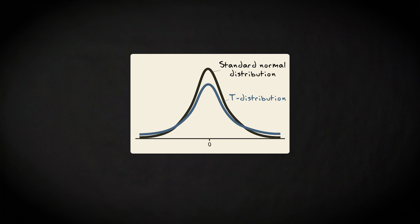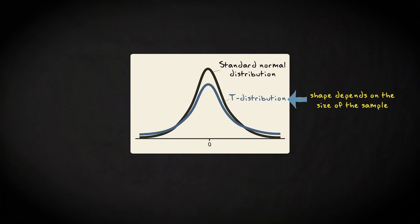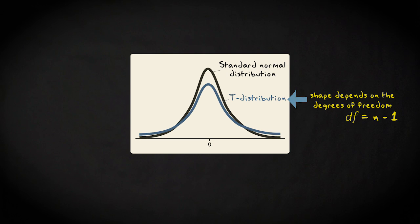The exact shape of the t-distribution depends on the size of the sample. The larger the sample, the more the t-distribution looks like the normal distribution. More precisely, the shape of the t-distribution is dependent on a single parameter, the so-called degrees of freedom, symbolized by df. The degrees of freedom parameter in the t-distribution equals the sample size n minus 1. This means that we actually have many different t-distributions — one separate distribution for every df.